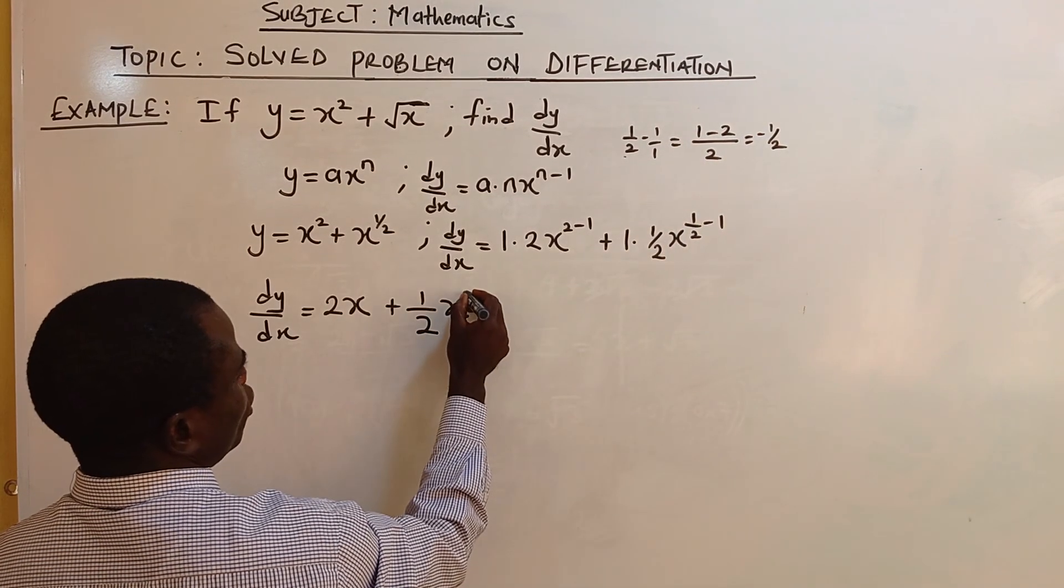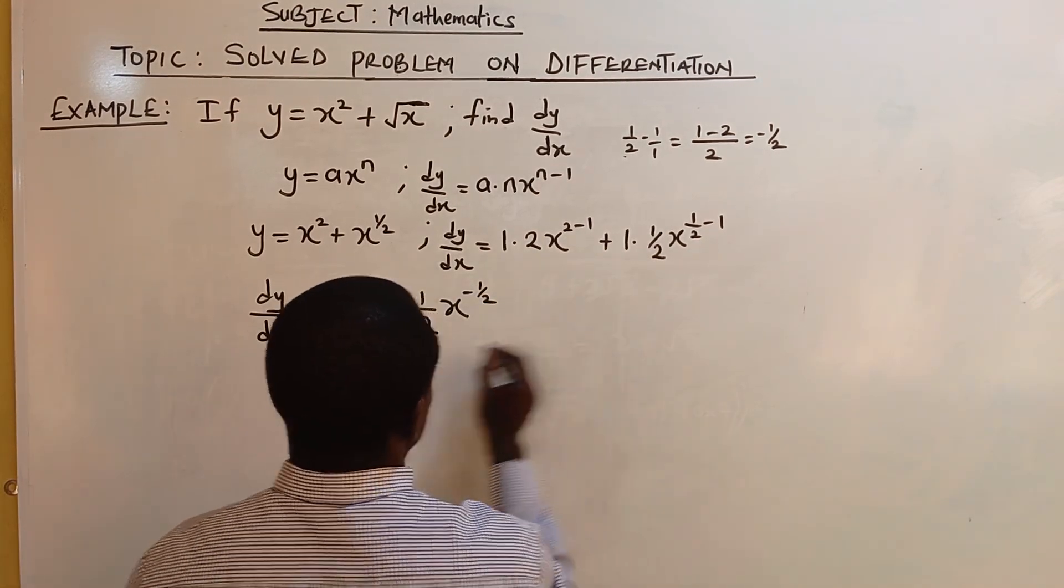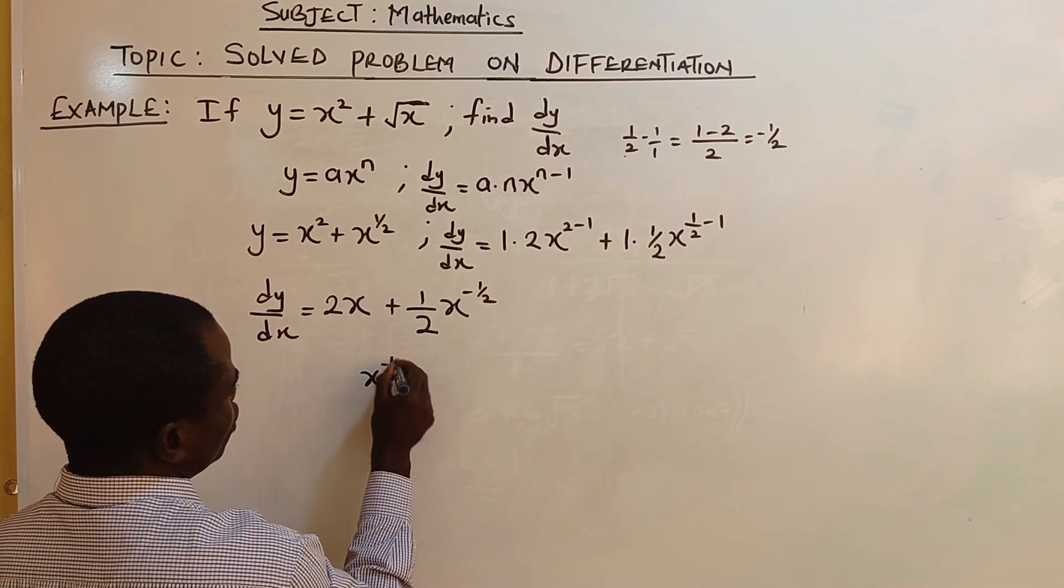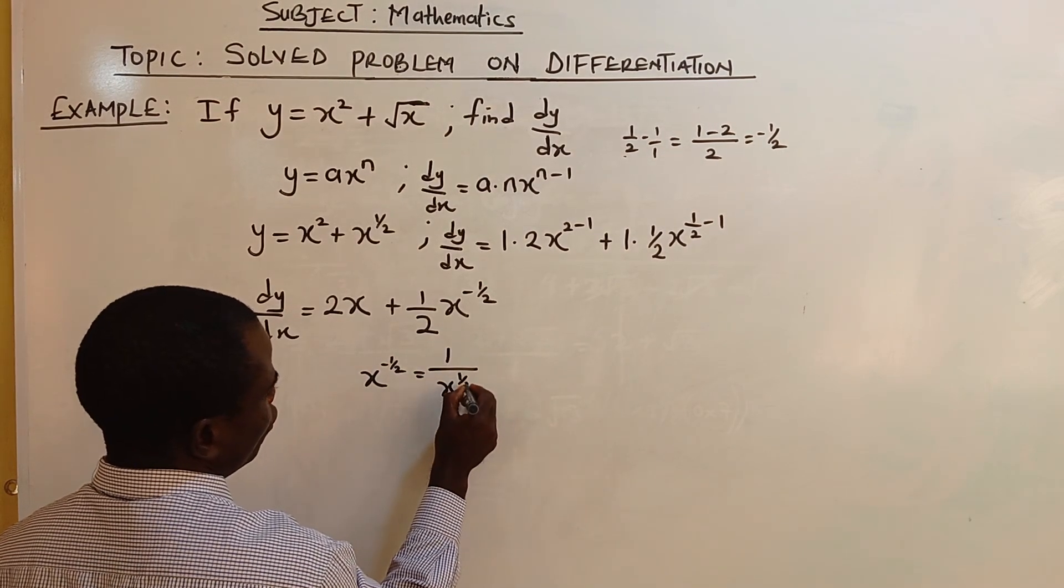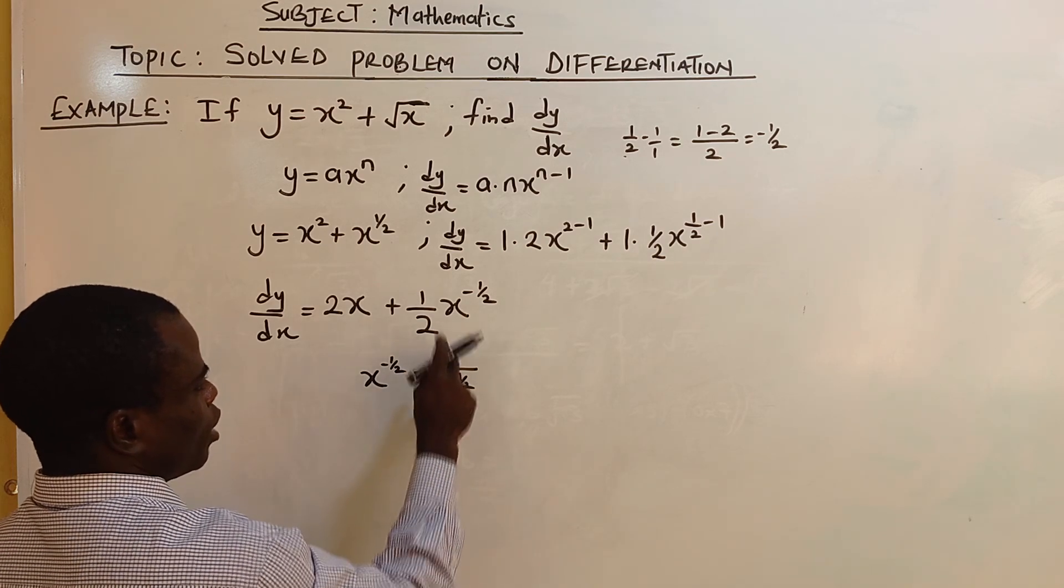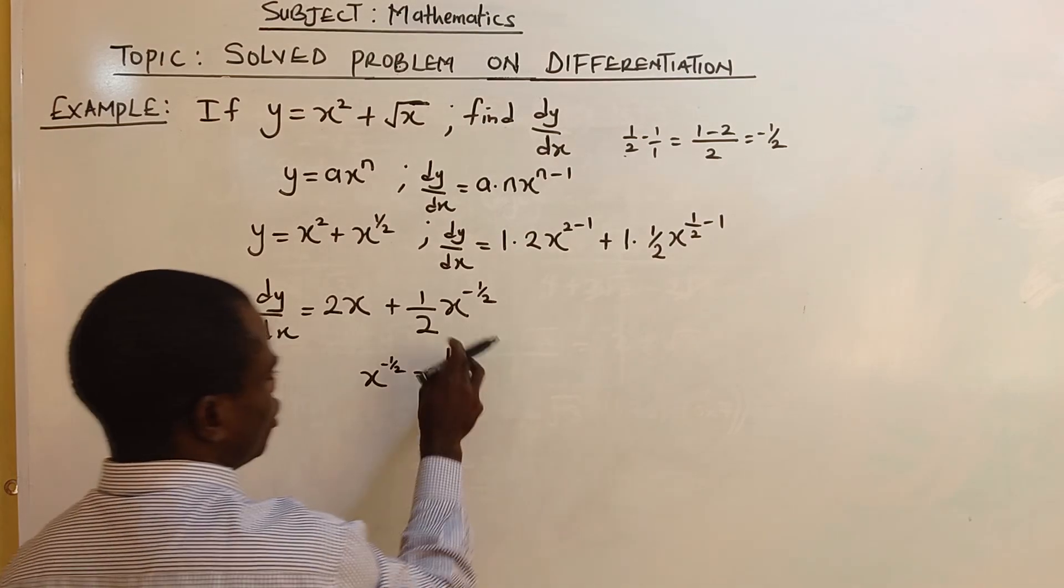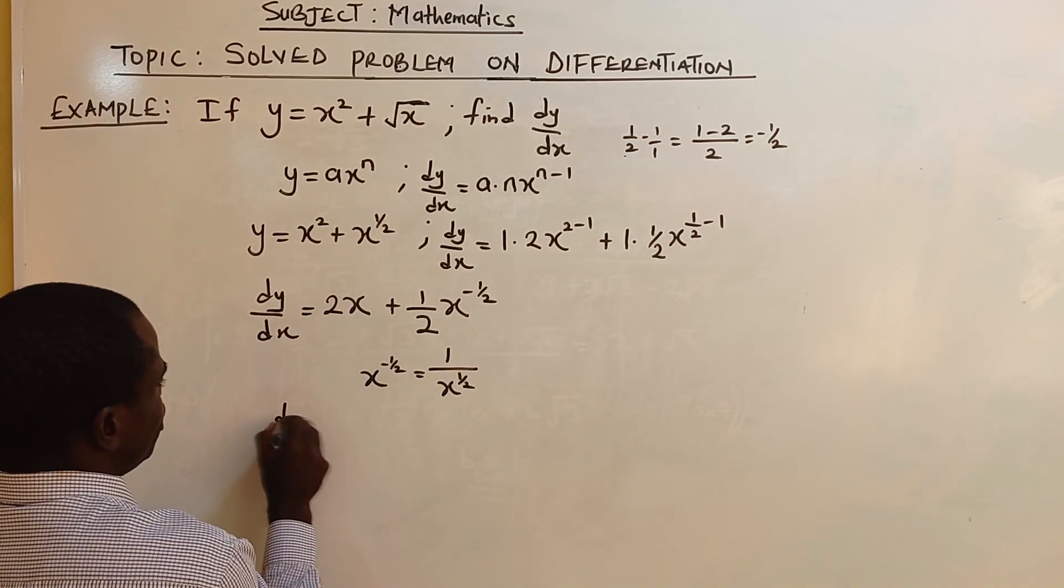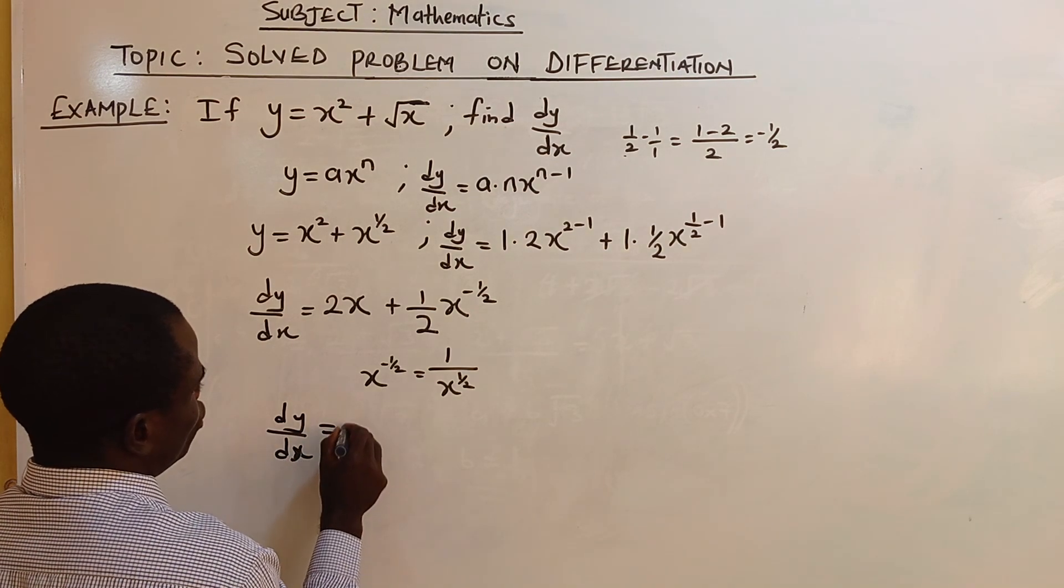Now x raised power minus half. In indices, you have x raised power minus half equal to one over x raised power half. The negative will disappear when you write one over the particular expression. The reciprocal of this will make the negative disappear.